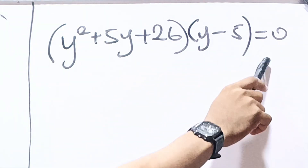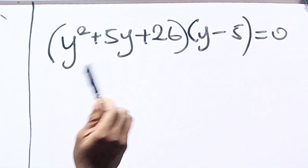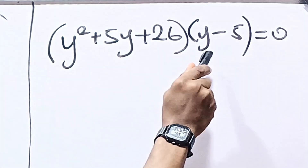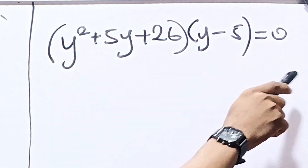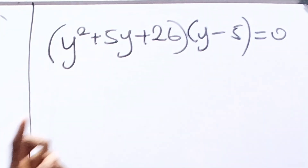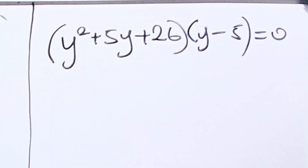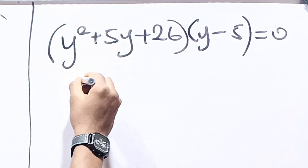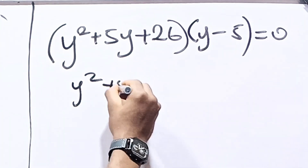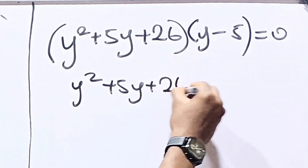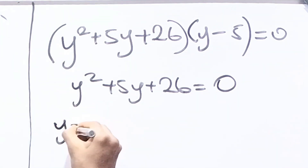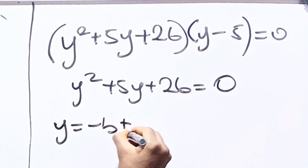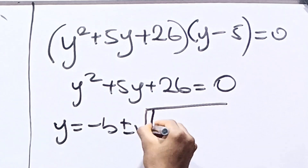Having factorized this expression, we can now say the full factored form equals 0. By the zero product property, either y minus 5 equals 0, giving y equals 5 as before, or the other factor y squared plus 5y plus 26 is equal to 0.